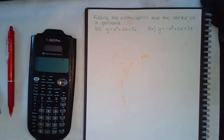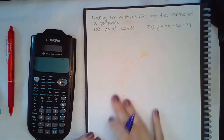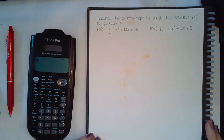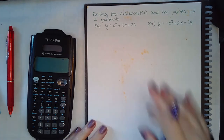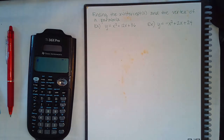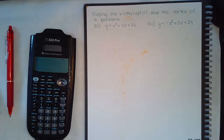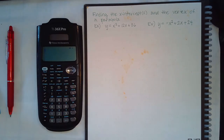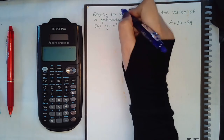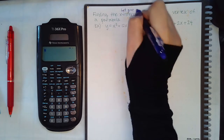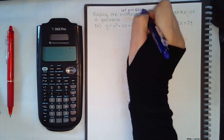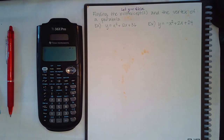Now we're finding the intercepts and the vertex of a parabola algebraically — no image is given and you're not required to draw it. To find the x-intercepts, all you do is let y equal 0 and solve. That will give you the x-coordinates where you touch the x-axis.